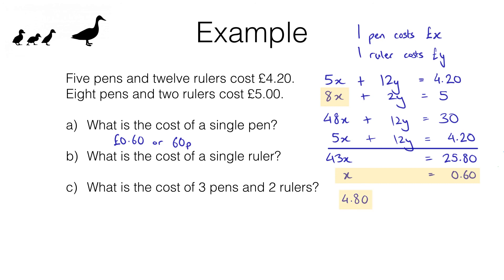So that's 4.8 plus 2y equals 5. We can subtract the 4.8 from the left and the right hand sides and that will leave me with 2y equals 0.2, which means y equals 0.1. So one ruler costs 0.1 pounds or basically 10 pence.